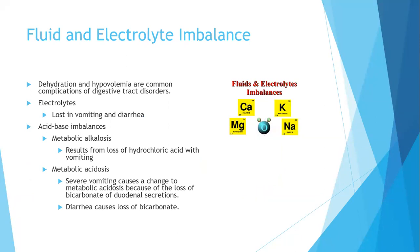Fluid and electrolyte imbalances often result from digestive disorders. Dehydration and hypovolemia — low blood volume — are common complications when you're losing a lot of fluid through the digestive tract. You lose electrolytes through vomiting and diarrhea, leading to acid-base imbalances. Vomiting causes metabolic alkalosis from losing hydrochloric acid, while diarrhea causes metabolic acidosis. With severe ongoing vomiting, you eventually lose bicarbonate from the small intestine, also causing metabolic acidosis — either of which can be life-threatening.